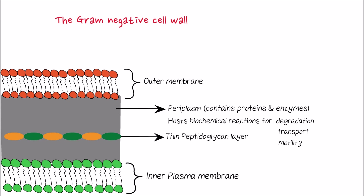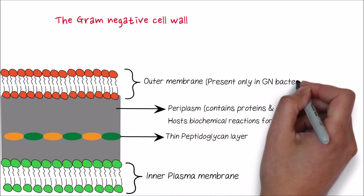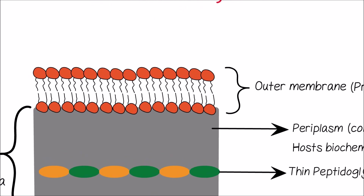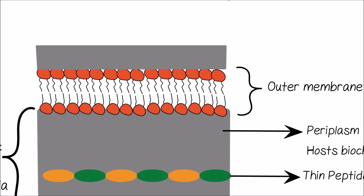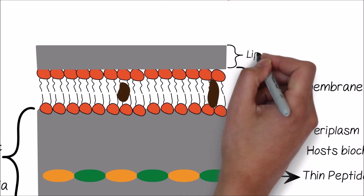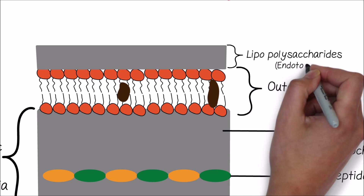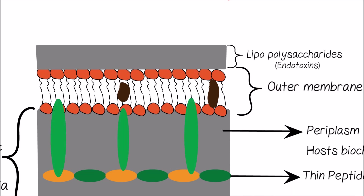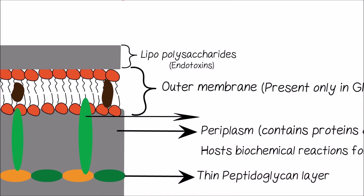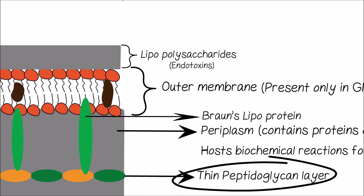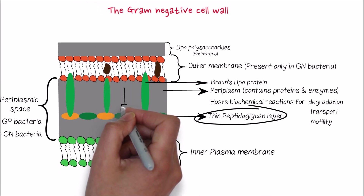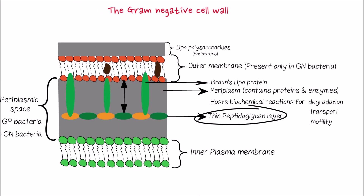The outer membrane can be found only in gram-negative bacteria and is absent in gram-positive bacteria. The outer membrane contains proteins, phospholipids, and lipopolysaccharides. Lipopolysaccharides are unique components of gram-negative bacteria and are referred to as endotoxins. The outer membrane also contains large quantities of Braun's lipoprotein, which is covalently bound to the peptidoglycan layer underneath by its hydrophobic end, strongly holding the peptidoglycan layer and outer membrane together.